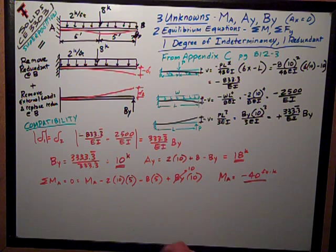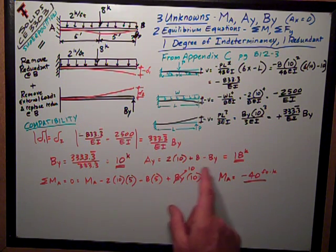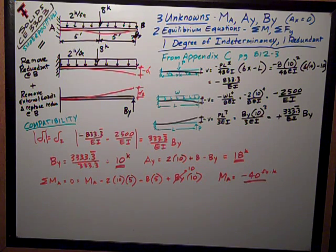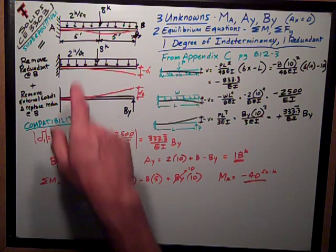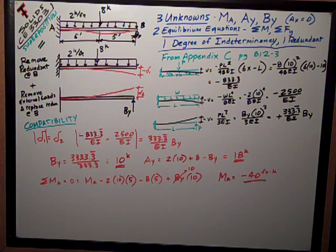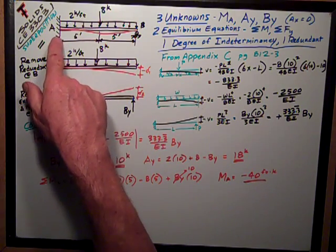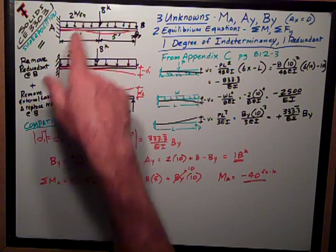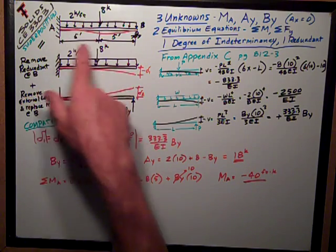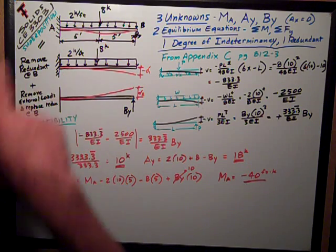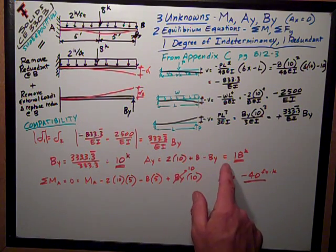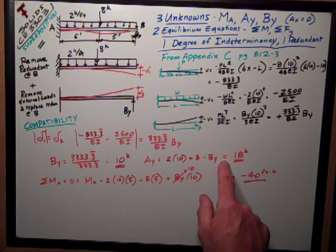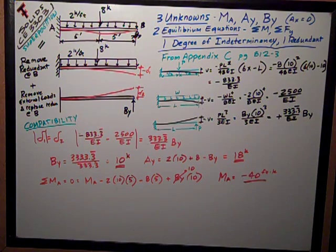So, the Ay force is 18 kips. It's interesting to note that the stiffness of the fixed connection at fixed support condition at A kind of sucks force towards it. If this was just a simple span beam, these loads would be equally distributed, and I would have half of 20 plus half of 8, so I would have 14 kips at each end. The stiffness of the support at A sucks four of those kips away from B and towards A. And so that makes sense to me, common sense wise.